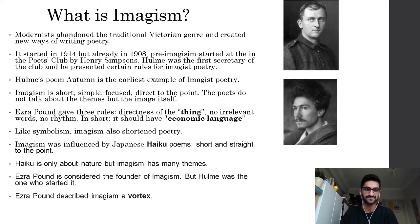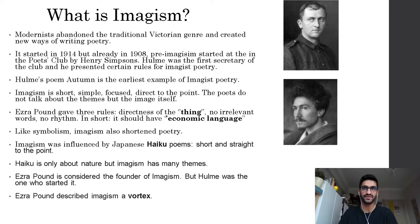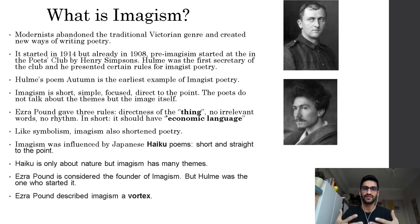So first of all, let's have a very short introduction to imagism. What is imagism? First, let's talk about modernism. Modernists abandoned the traditional Victorian genre and created new ways of writing. Before these movements — symbolism, war poetry, and imagism — in the 19th century and close to the beginning of the 20th century, we had Victorian literature. It was old and traditional, so poets and writers got very bored with it and tried to find new ways of writing, new genres and new movements in literature.